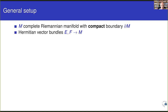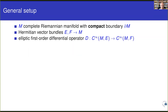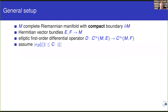We fix two vector bundles over the manifold and look at a first-order differential operator D mapping sections of E to sections of F — for instance, a Dirac-type operator mapping positive-chirality spinors to negative-chirality spinors. I assume the principal symbol of D is bounded with respect to the complete Riemannian metric. If M is compact or D is a Dirac-type operator, this is automatic.